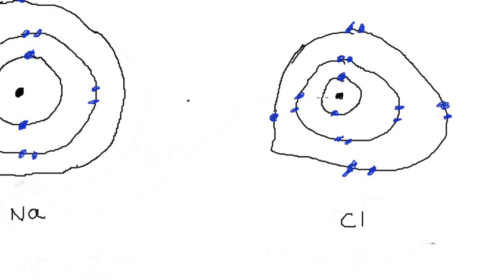The first shell can only have two electrons. The second shell can only have eight. Then I continue on the third shell until I have a total of 17 — so 2 plus 8 is 10, and then 11 through 17 fills the third shell. So we have 17 electrons for chlorine.